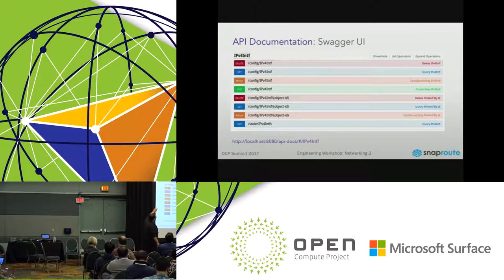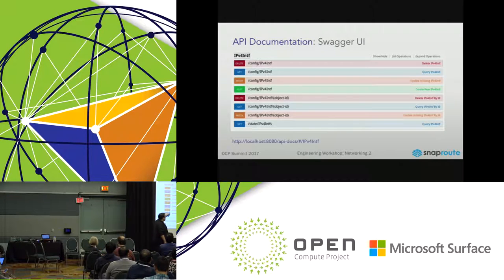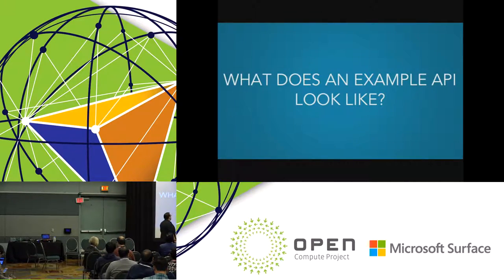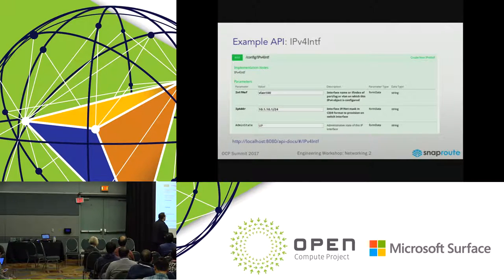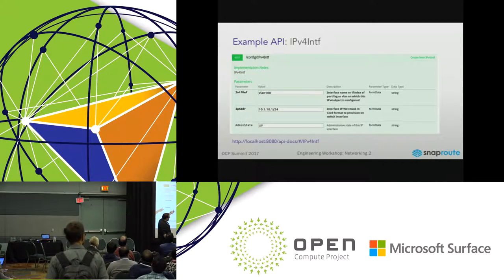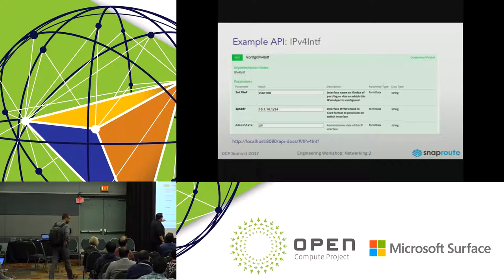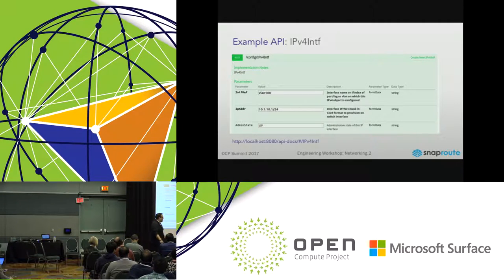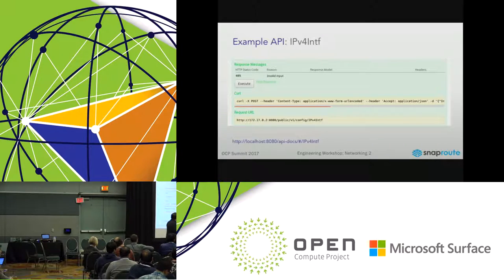For this IPv4 interface type, Swagger shows you everything you can do — delete, get, patch, post — for an individual object or in bulk. Looking at the IPv4 interface API, it shows the parameters, the values you enter (vlan 100, 10.1.10.1/24), the admin state up as a default, descriptions, expected types (strings, forms), and the URL for reference.